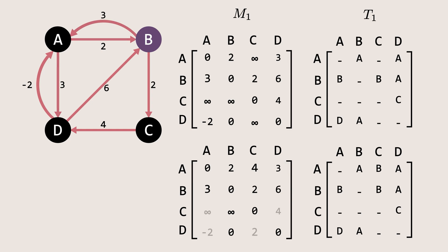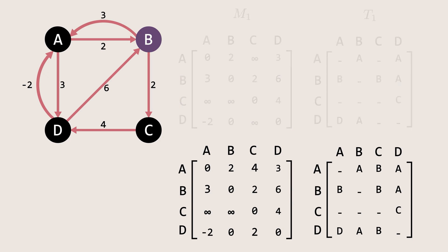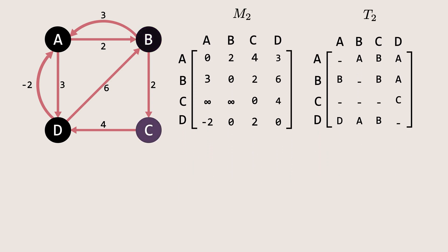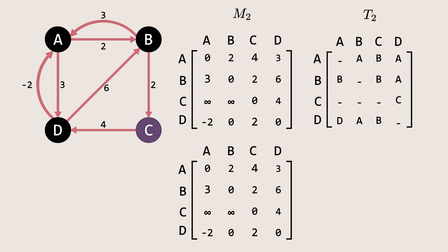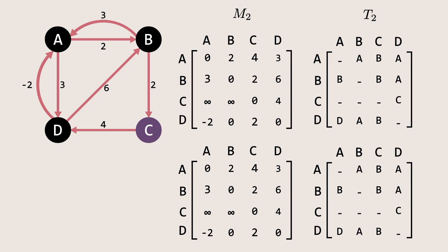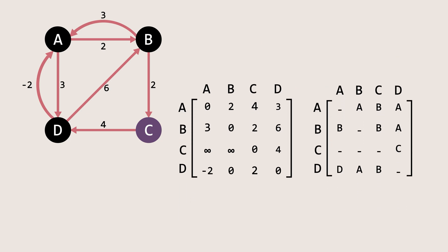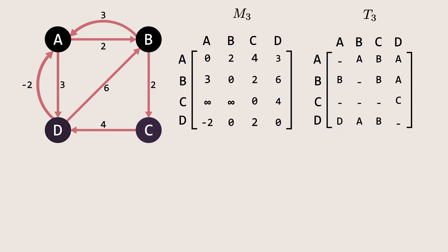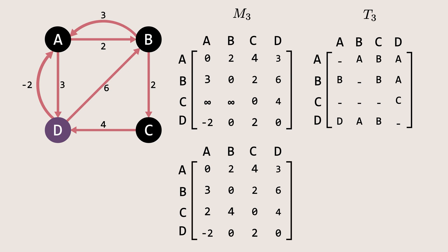Similarly, we will perform the remaining updates. Try pausing the video and solving it yourself — you should get these updated values. This gives us matrix M2 and T2. Similarly, we will find the matrices M3 and T3 via node C in the next iteration, and then the matrices M4 and T4 via node D.